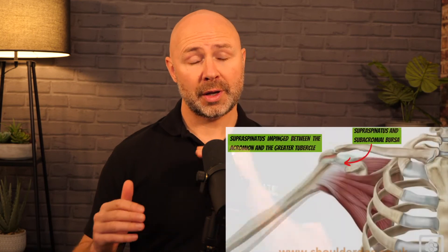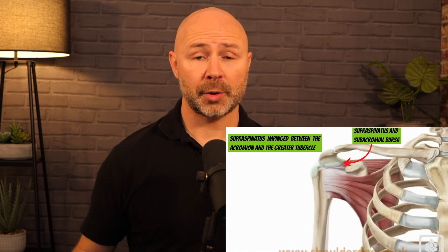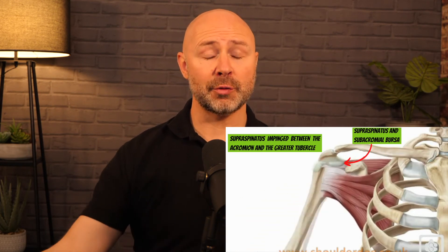A rotator cuff tear was therefore moved down the list. Much more likely is a tendinopathy, calcific tendinopathy, or subacromial bursitis — something that's most likely increasing the amount of tissue that has to pass through the canal between the acromion and the greater tubercle. We know from earlier that externally rotating the shoulder takes the greater tubercle away from the acromion, giving much better movement and greater ability to raise the arm before pain occurs.